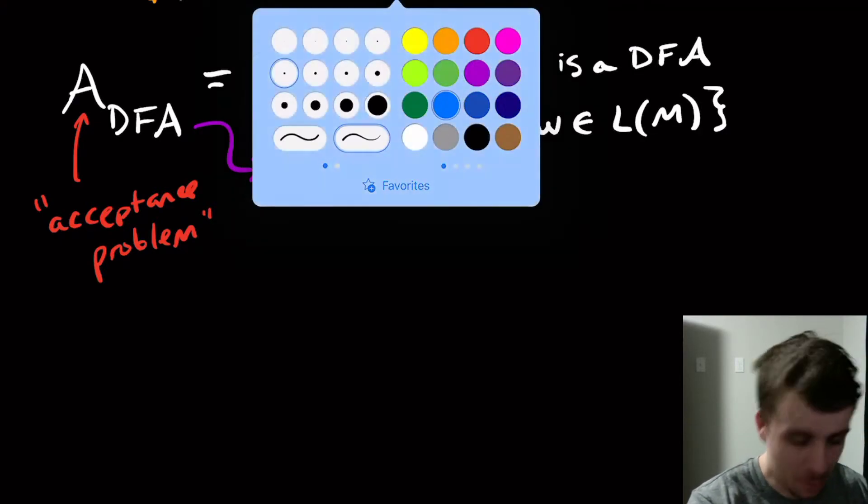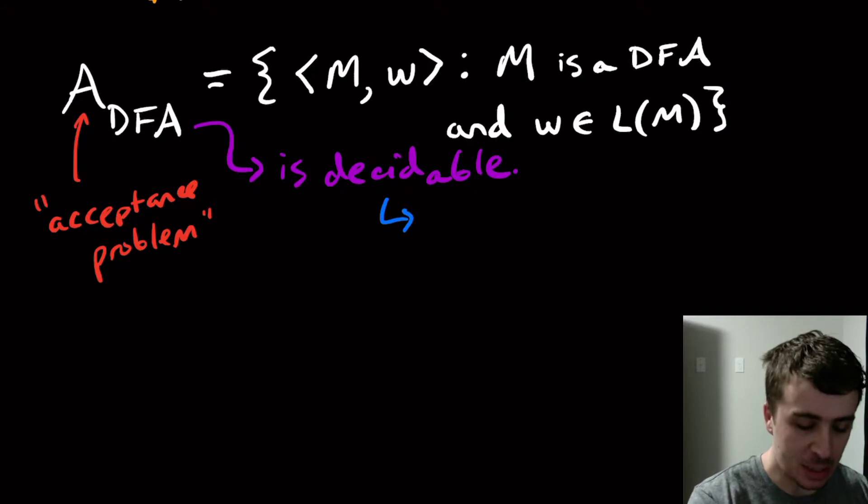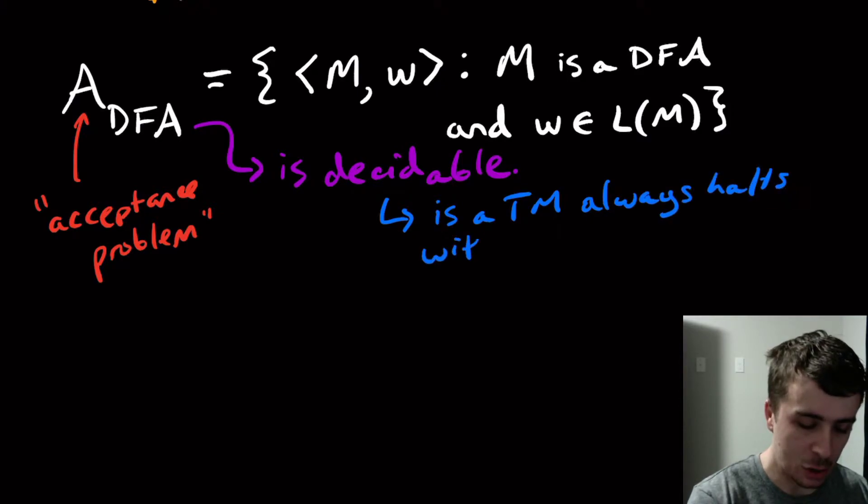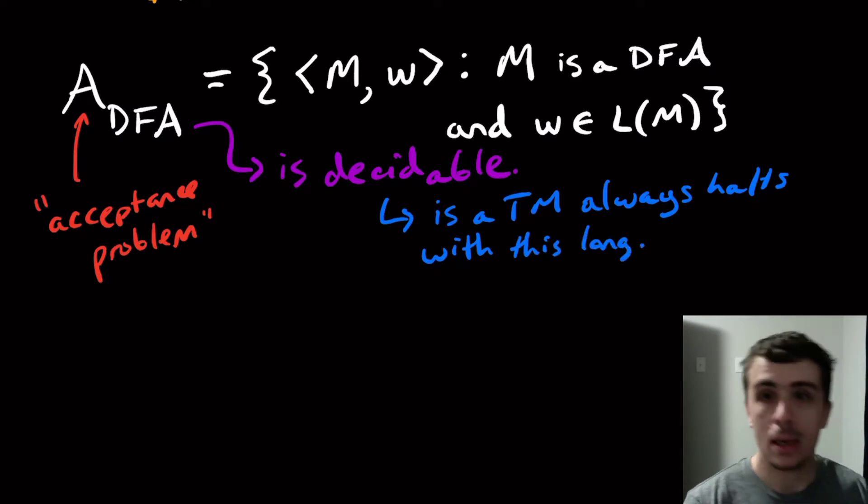And if you don't remember what decidable means, this means that there is a Turing machine that always halts with this language. So if I can make a Turing machine that has exactly the language A sub DFA, and I can show that it runs in a finite amount of time, it never runs forever, then A sub DFA is in fact decidable.